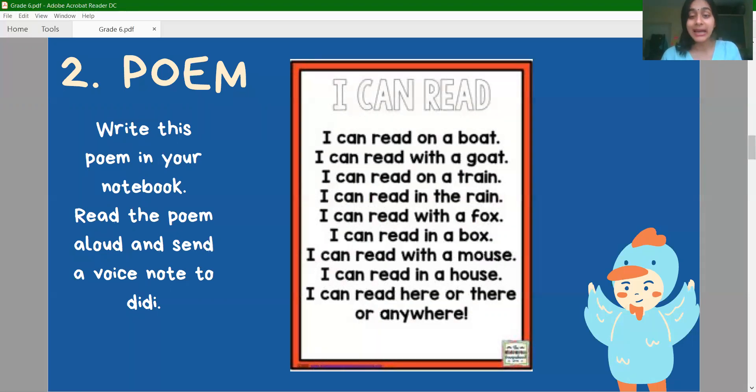The title of the poem is, I can read. I can read on a boat. I can read with a goat. I can read on a train. I can read in the rain. I can read with a fox. I can read in a box. I can read with a mouse. I can read in a house. I can read here or there or anywhere. You will read and make a voice note or a video and send us.